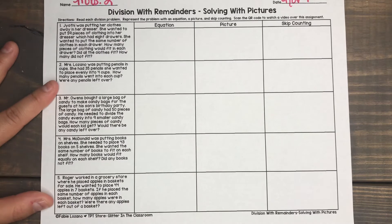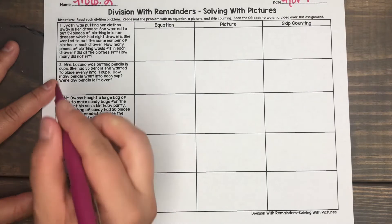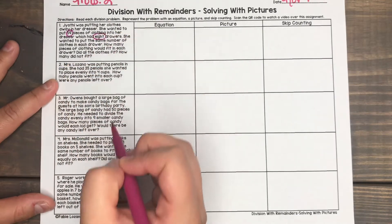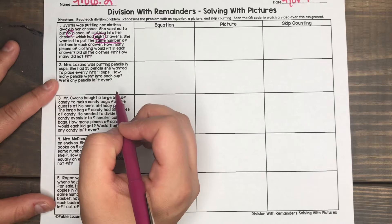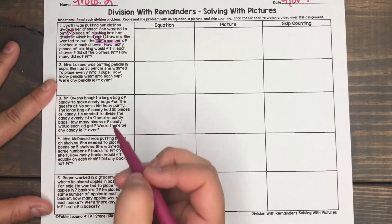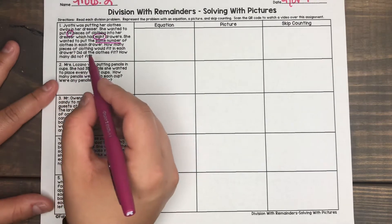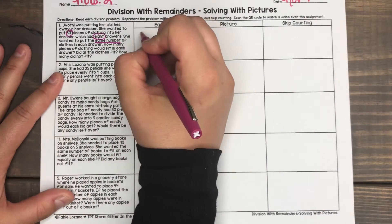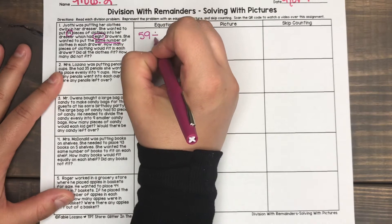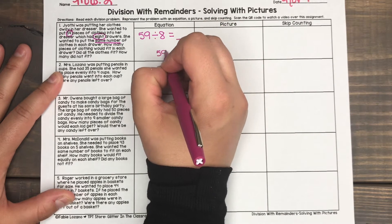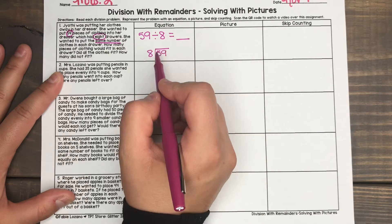Let's go ahead and solve this together. Number one says: Jyothi was putting her clothes away in her dresser. She wanted to put 59 pieces of clothing into her dresser, which had eight drawers. She wanted to put the same number of clothes in each drawer. How many pieces of clothing would fit in each drawer? Did all the clothes fit? How many did not fit? Whenever I'm dividing, I need to make sure I'm writing out my equation. I have 59 pieces of clothing divided into eight drawers — eight equal groups. I can also set up my division as 59 divided by eight. Either one is acceptable.